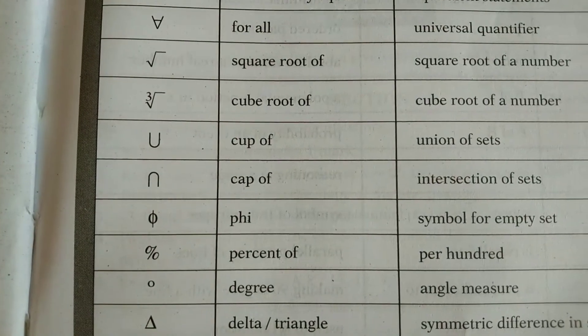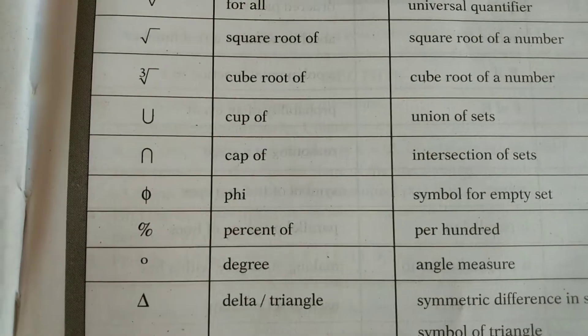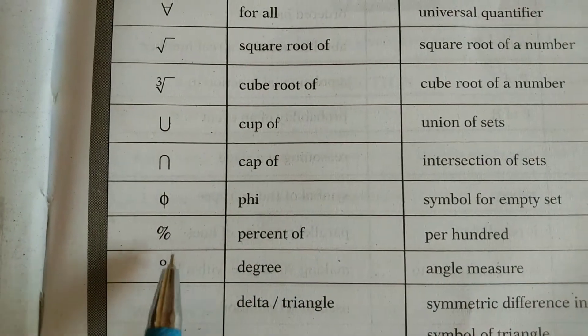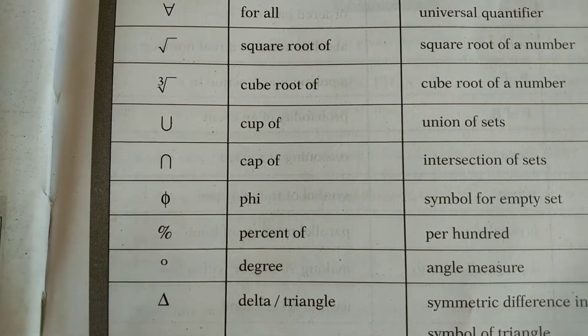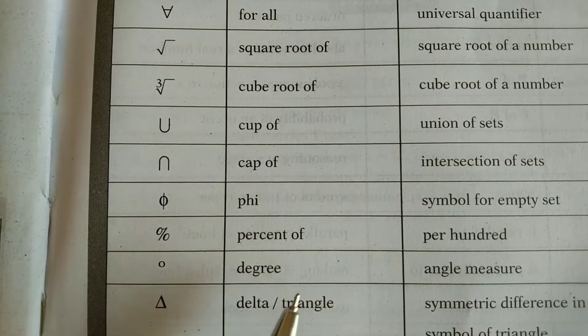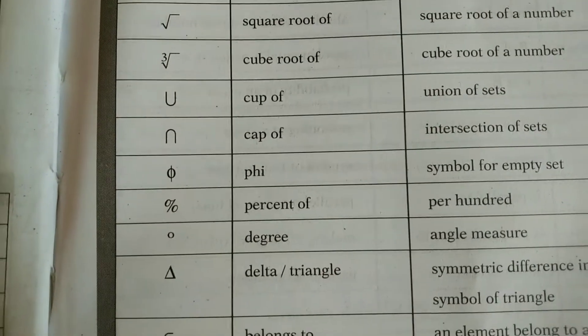And then phi, that is symbol for empty set. And then percent of, that is per hundred. This is the symbol for degree, which is used to measure an angle.